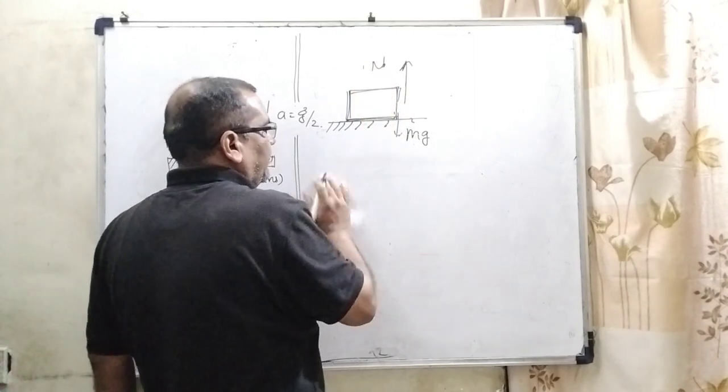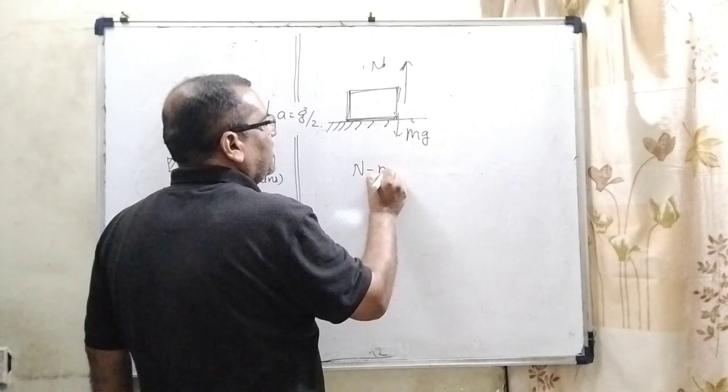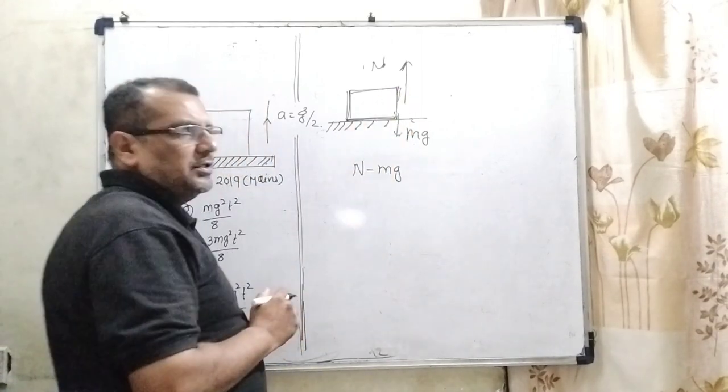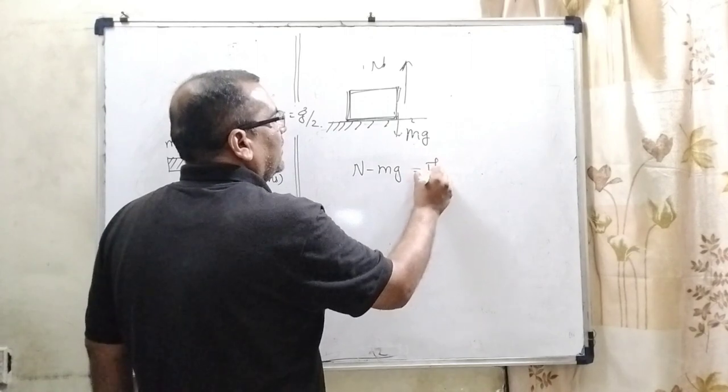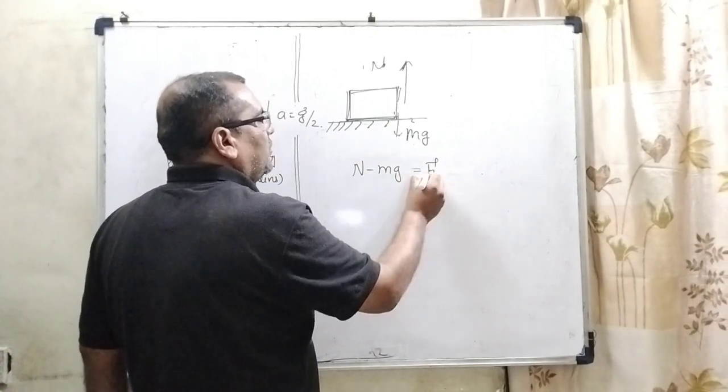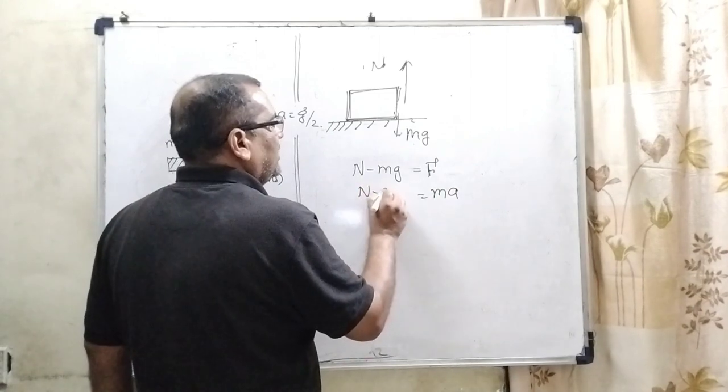The net or resultant force is N - mg because its direction is opposite. N - mg equals F. What is F? F is the resultant force. It can be written as ma, so N - mg equals ma.